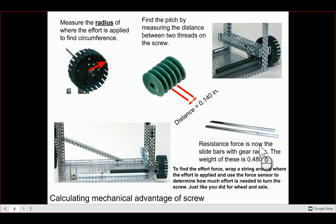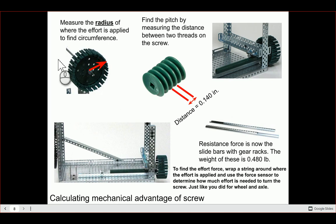For the screw part of the activity, make sure you have one of the simple machine devices that has the bars with the gear rack — the one that actually turns. You need to measure the radius of where the effort is applied to find the circumference. For the pitch: measure the distance between two threads on the screw. I've already done this — the distance is 0.140 inches, measured with a dial caliper.